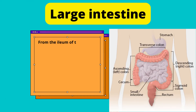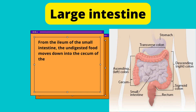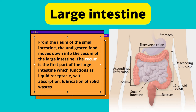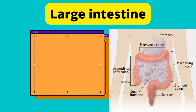From the ileum of the small intestine, the undigested food moves down into the cecum of the large intestine. The cecum is the first part of the large intestine, which functions as a liquid receptacle, salt absorption, lubrication of solid waste, and cellulose digestion.